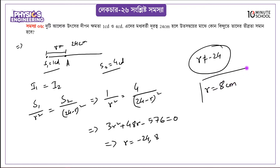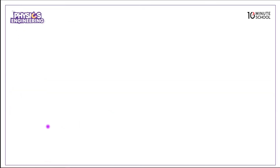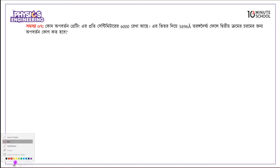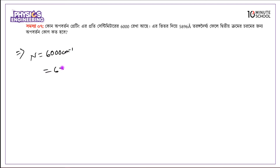So r equals 8 centimeters — that's the answer. Now for the next problem involving power and wavelength: the wavelength is 5896 Angstroms, which is 5896 into 10 to the power minus 10 meters.